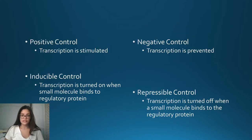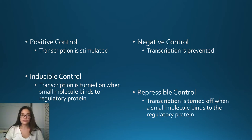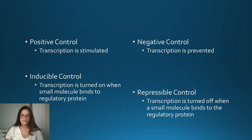First we're going to go over some of the regulatory mechanisms for transcription. We have positive and negative control. Positive control is when the regulatory protein binds to the DNA and transcription is stimulated, and negative is when transcription is prevented when the regulatory protein binds to the DNA. We also have inducible and repressible control. Inducible control is when transcription is turned on when the small molecule binds to the regulatory protein, and repressible is when transcription is turned off when the small molecule binds to the regulatory protein.